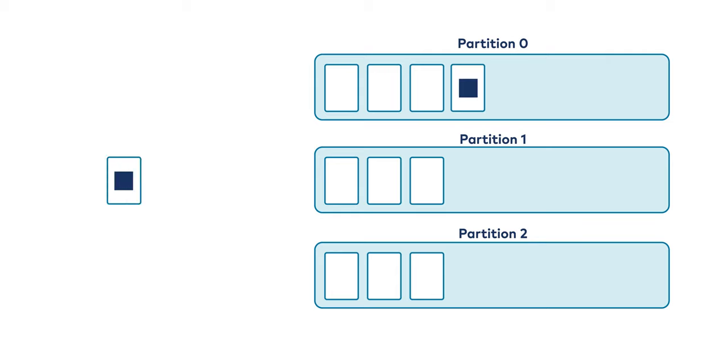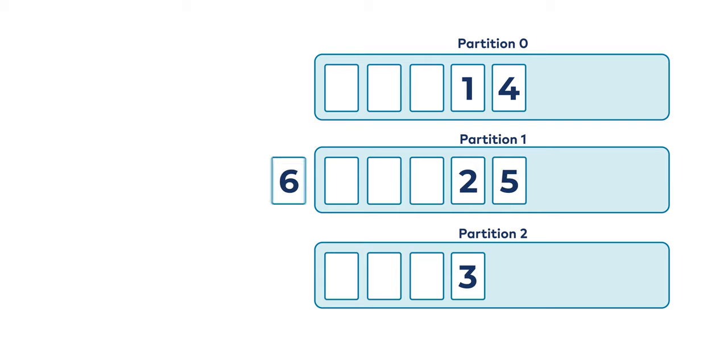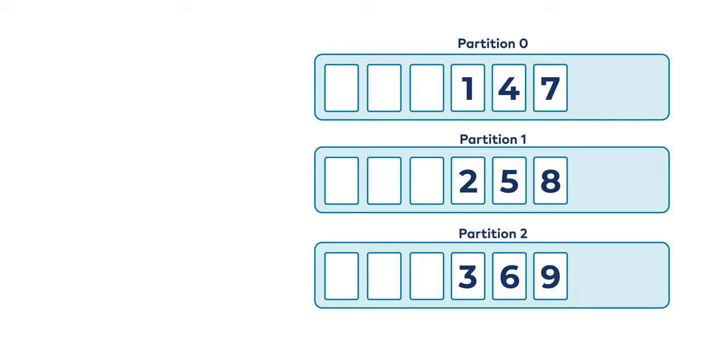If the message does have a key, then we use that key to figure out which partition to put the message in. What usually happens is that we run that key through a hash function, take the output of that hash function mod the number of partitions, and the resulting number is literally just the partition number to write to. The cool thing about this is that it allows Kafka to guarantee that messages having the same key always land in the same partition, and therefore are always in order. So if your key is null and you're round-robining, you're distributing evenly to partitions and able to scale a lot, but you're never really going to know what order things came in.